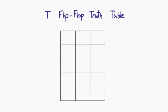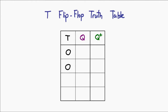The truth table has only four rows because you only have two variables: the value of T, your input, as well as the internal state. Very simply speaking, if T is zero, then the internal state stays the same. If T is one, the internal state changes. That's literally it for a T flip-flop — that's as simple as it gets.